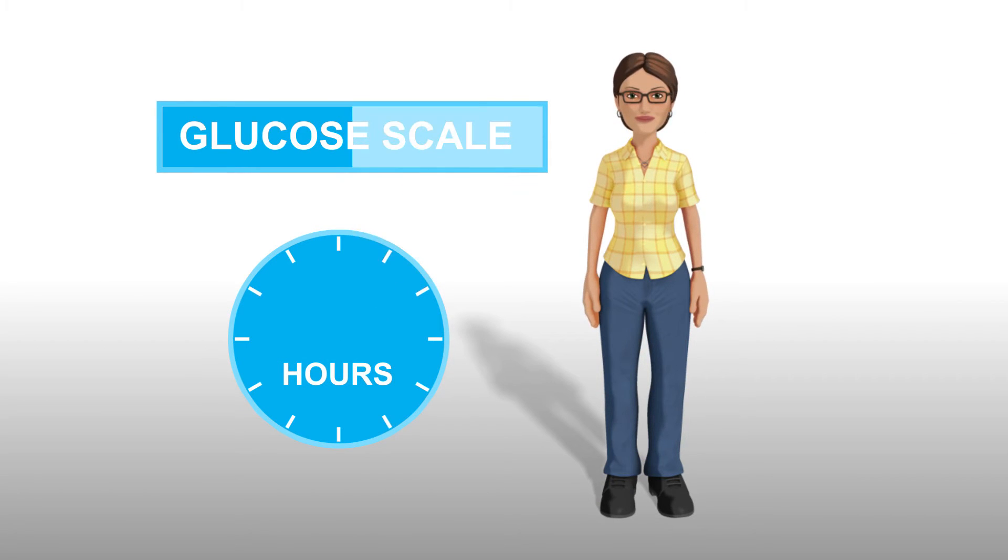For people with type 1 diabetes, it is important to understand how much carbohydrate is within food to help match their insulin injections to their food intake. For people with type 2 diabetes, it is important to understand the amount of carbohydrate eaten as this will impact blood glucose levels.